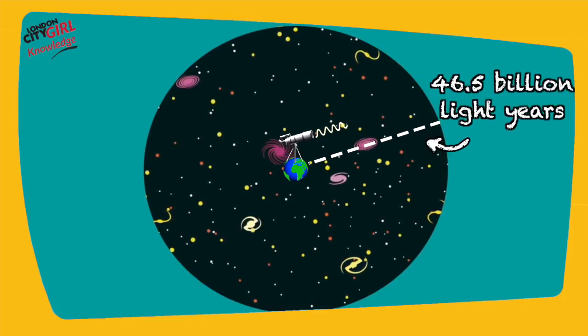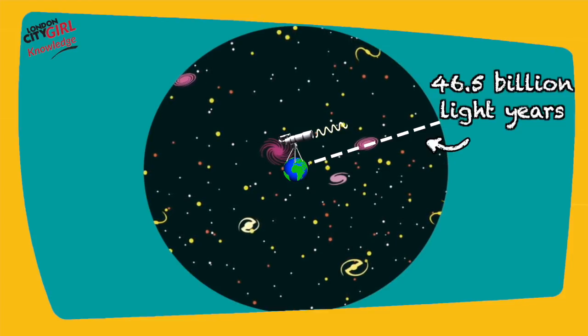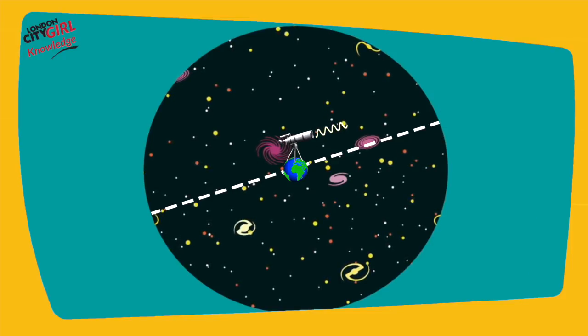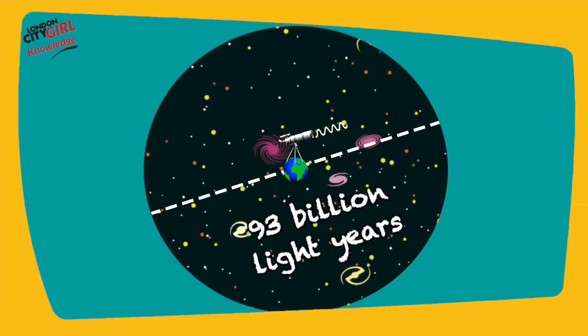The radius of the observable universe is therefore 46.5 billion light-years, and the diameter of the observable universe is 93 billion light-years across.